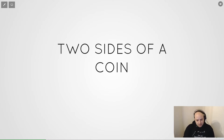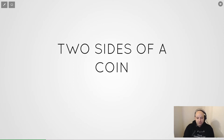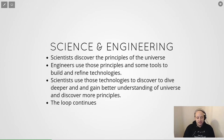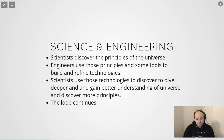As we saw from the definitions, science and engineering share a lot — they're two sides of the same coin. Scientists constantly try to discover principles and laws governing the universe. Engineers use those principles to build new technologies and tools. Scientists then utilize those new technologies to gain better understanding of the universe and find more principles, and this loop continues.